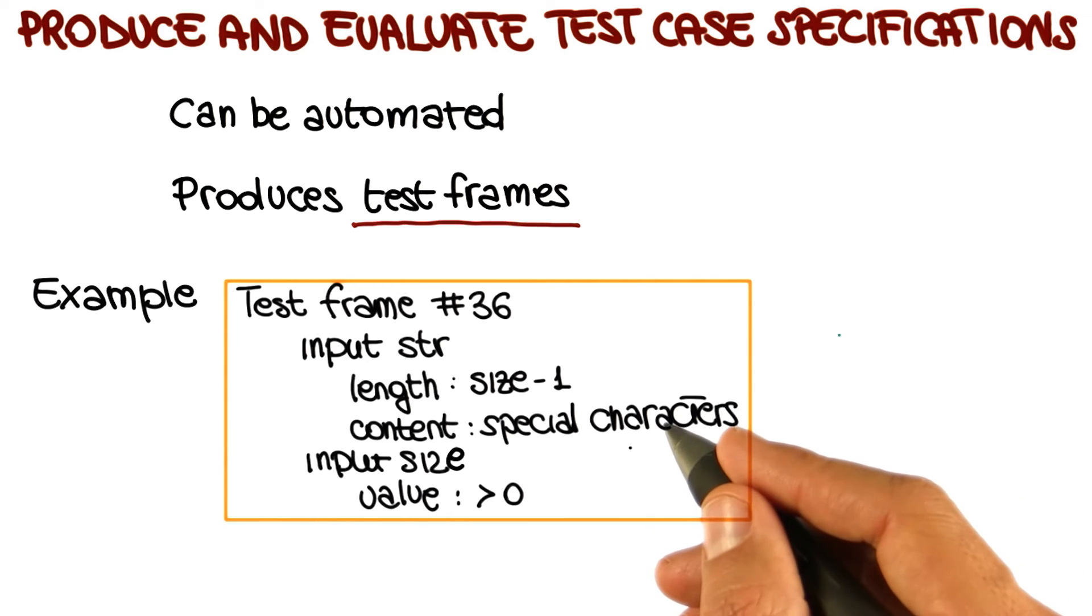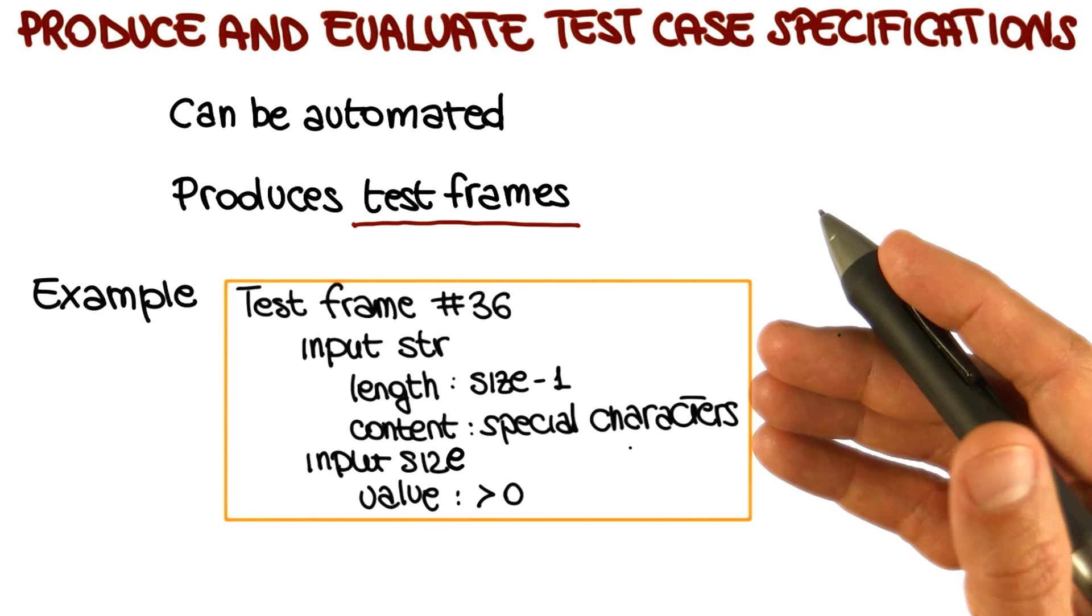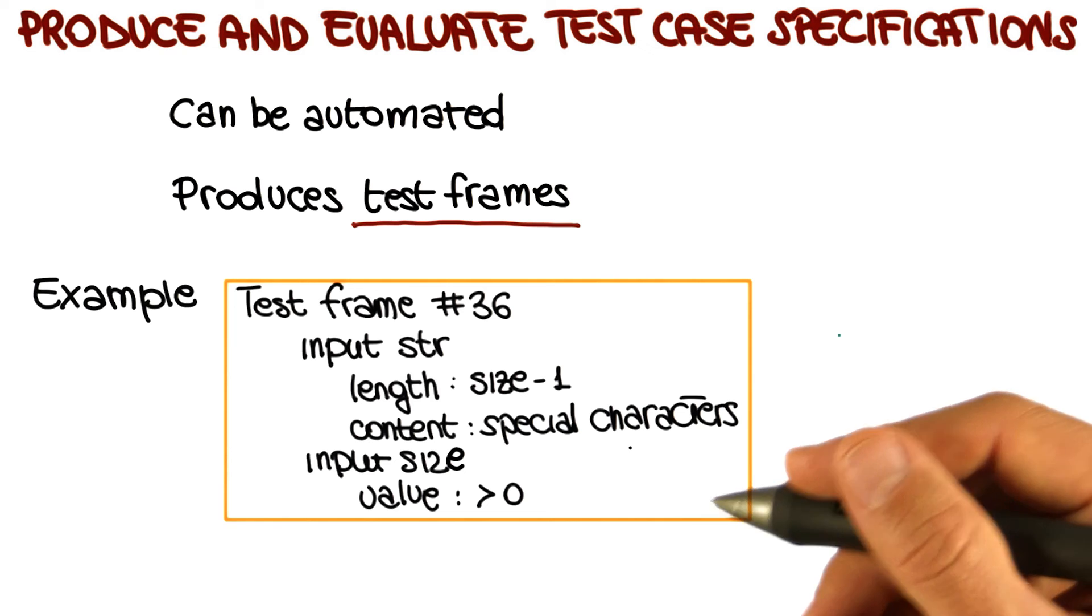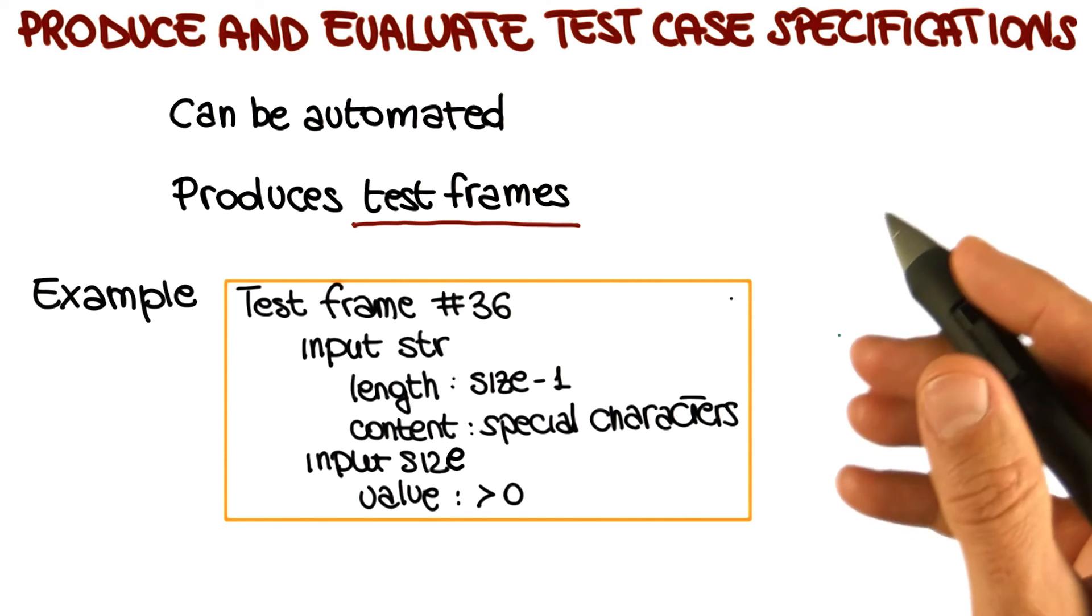And the beauty of this is that if the number is too large, we can just add additional constraints and reduce it. And given that the step is automated, we just add constraints, push a button, and we get our new set of test frames. And again, we can evaluate it, either go ahead or add more constraints if we need to further reduce it. And this is something else that we'll see in our demo.